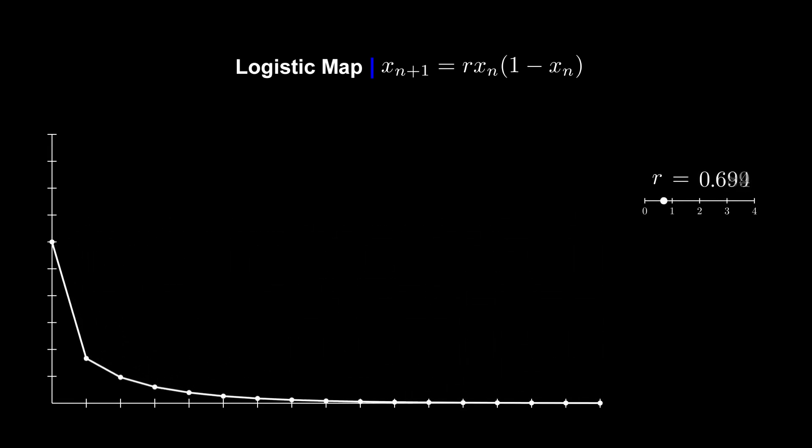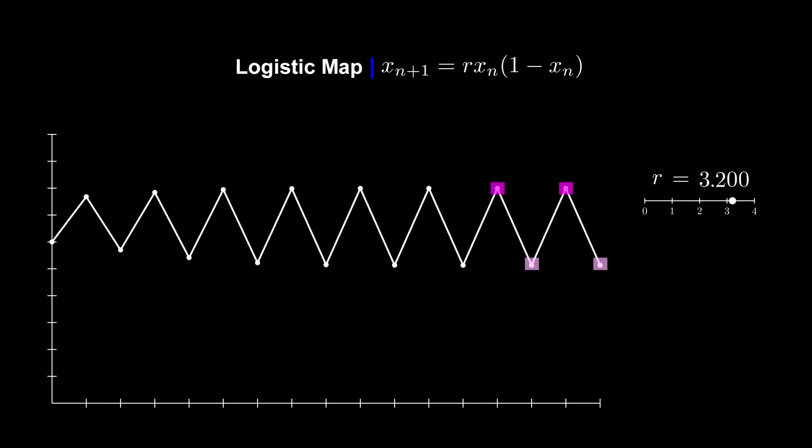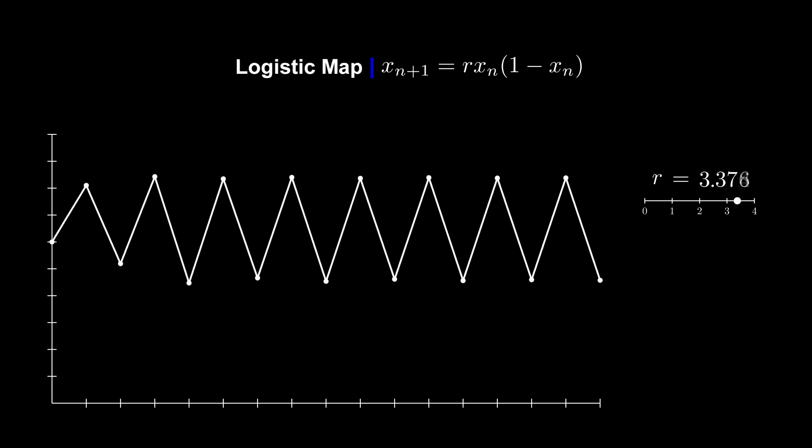For certain values of r, we see a convergence to a fixed point. When we raise the value to 3.2, we see that the population starts oscillating between two values. And if we adjust it slightly again, we start to see a 4 cycle.